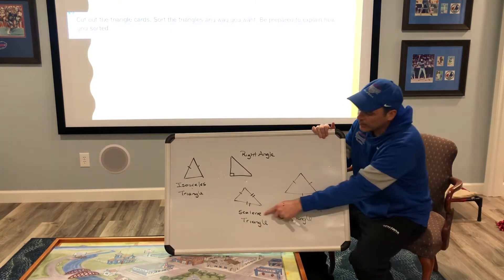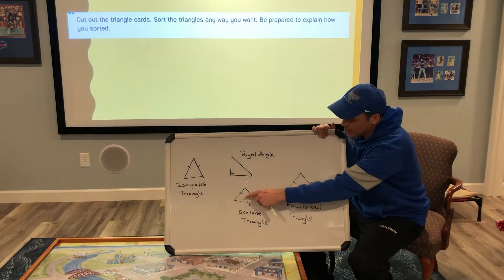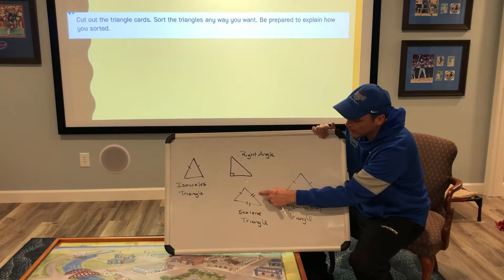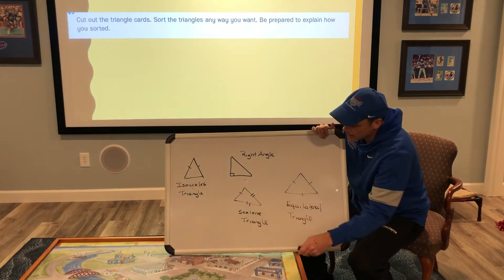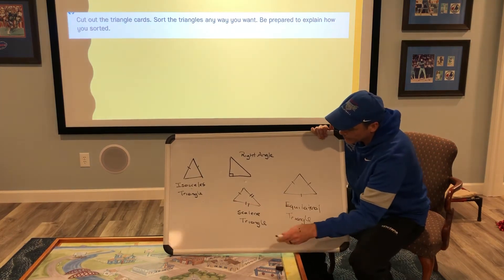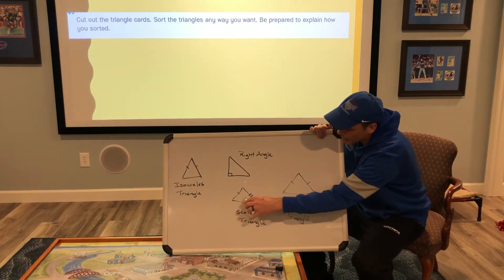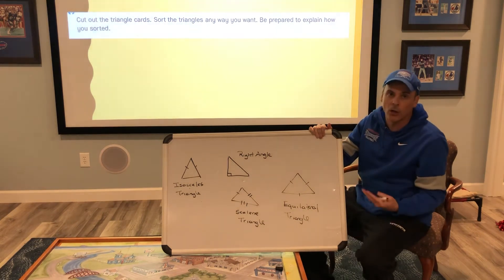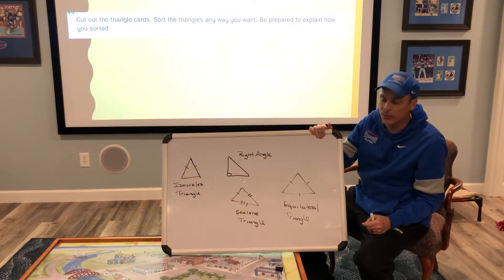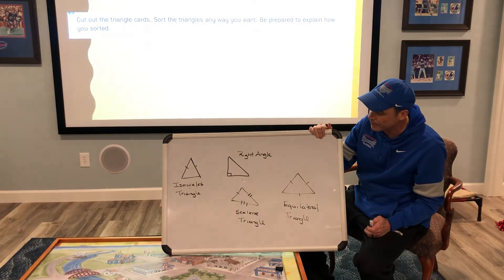You'll also notice here on this side there's one tick mark, here there's two tick marks, and here there should be a third tick mark. This means that all of the angles and the sides are different lengths, meaning that they are a scalene triangle.